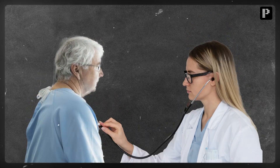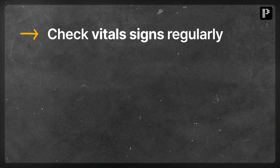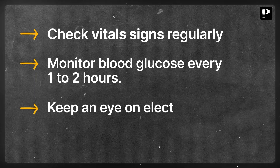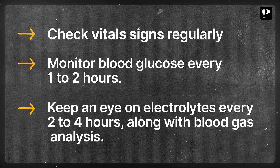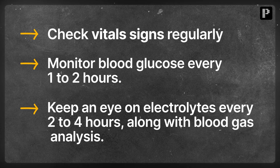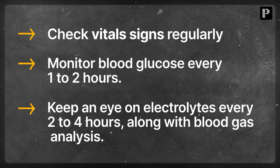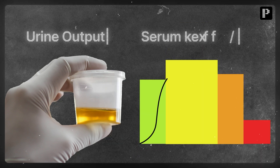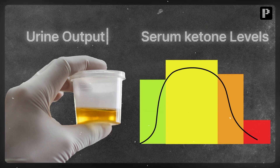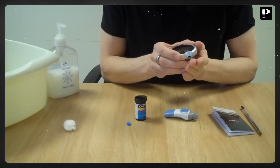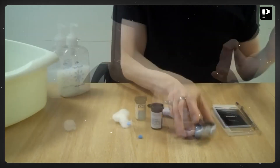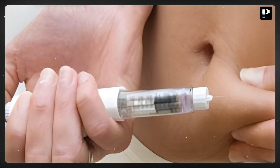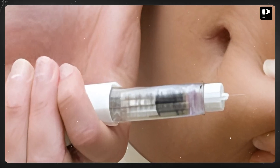Check vital signs regularly. Monitor blood glucose every one to two hours. Keep an eye on electrolytes every two to four hours, along with blood gas analysis. Also track urine output and serum ketone levels to gauge progress.